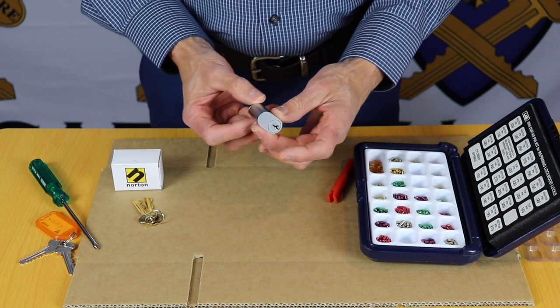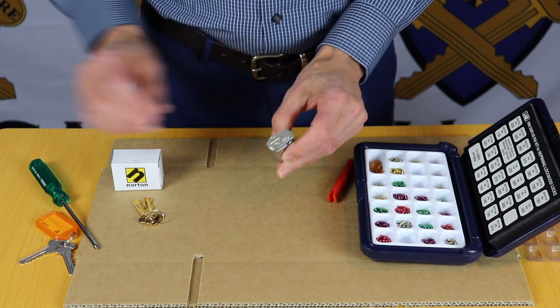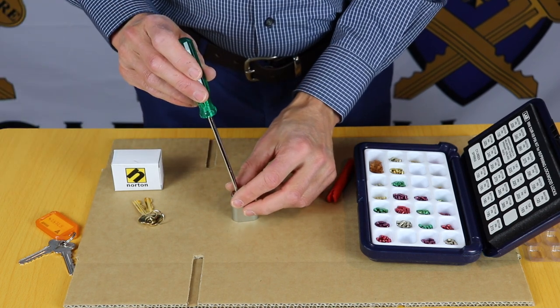So first of all, to rekey these cylinders we need to take the cam off the back, two small Phillips head screws.